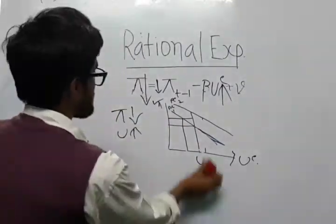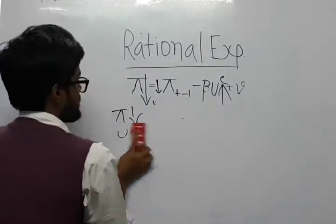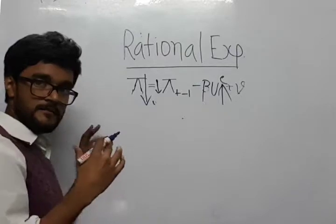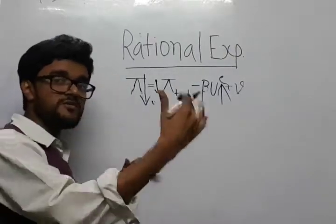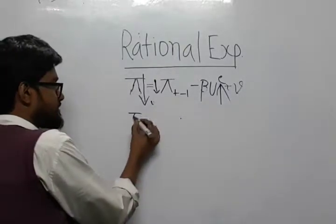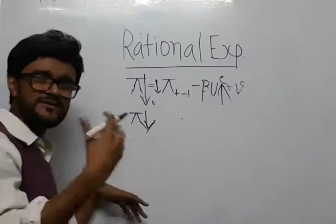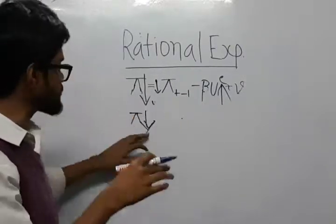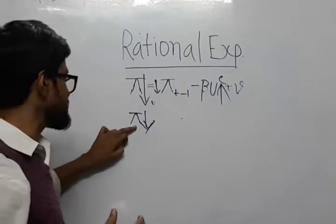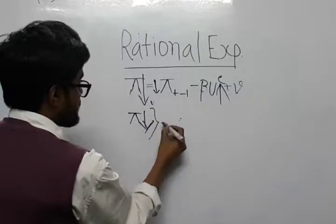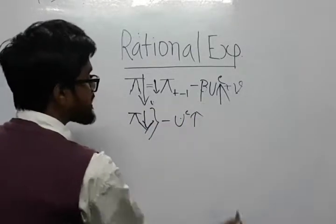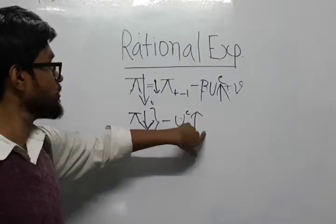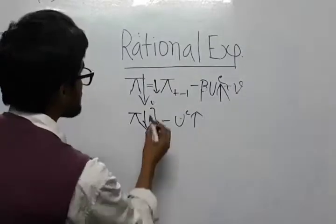How does this take place? Now, if the government announces before work that they will decrease the inflation rate — either through fiscal policy or monetary policy, let's say by reducing money supply — they will reduce the inflation rate. But there are people like Muth and Lucas who proposed a theory called rational expectation.